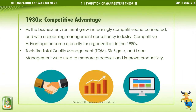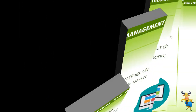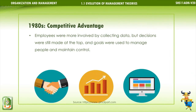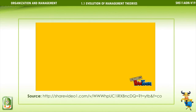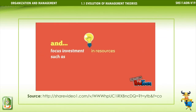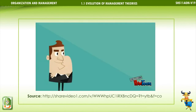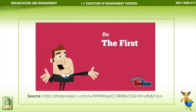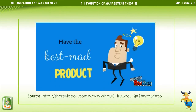In the 1980s, as the business environment grew increasingly competitive and connected, and with a blooming management consultancy industry, competitive advantage became a priority for organizations. Tools like Total Quality Management (TQM), Six Sigma, and Lean Management were used to measure processes and improve productivity. Employees were more involved by collecting data, but decisions were still made at the top, and goals were used to manage people and maintain control.